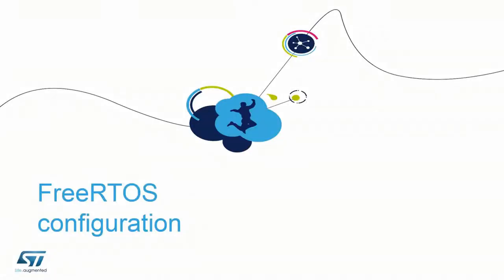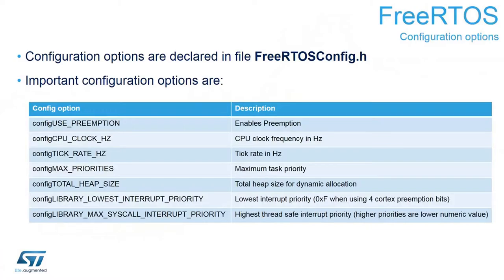Within this part we will discuss a bit about FreeRTOS configuration. Most of the configuration parameters are set within the FreeRTOSConfig.h file. It is a source file which is one of the key components of the operating system, and those components are completely independent of the platform. The most important parameters: the first one is configUSE_PREEMPTION, which defines whether our operating system will work in preemption mode or cooperative mode.